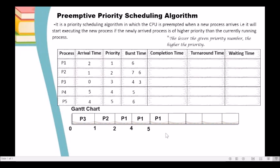P1 will execute until its remaining burst time is exhausted. Its burst time is 6, but it already executed for 2 units (time 2–4) and 1 unit (time 4–5), totaling 3 units. So it still needs 3 more units. Adding 3 to 5, P1 completes at time 8.